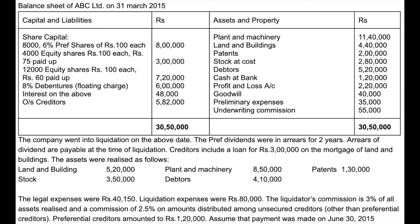Creditors include a loan of three lakhs on the mortgage of land and buildings. So we are going to have three lakhs on the security of land and buildings — assets realized. Land and building surplus is going to be added. The other information is: legal expenses amounted to forty thousand one hundred and fifty, so those are payments — liquidation expenses.